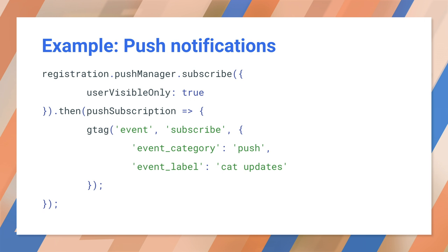Here's a sample of using custom events to track push notifications. You can add events to fire when users subscribe or unsubscribe to push notifications. Here we send a subscribe event, letting us know that a user has subscribed to our notifications. You should also track errors, such as errors in the subscription process. These can help you retain customers who might otherwise quit in frustration.